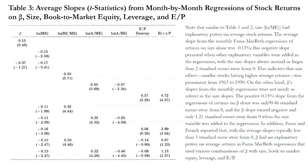The size effect was that smaller stocks had higher average returns than larger stocks. Beta's slope, by contrast, was not as robust: the positive 0.15% slope from regressions of returns on beta alone was only 0.46 standard errors from zero, and the beta slope turned negative at only 1.21 standard errors from zero when the size variable was added. Fama and French reported that beta had no explanatory power on average returns in regressions using various combinations of beta with size, book-to-market equity, leverage, and earnings to price.